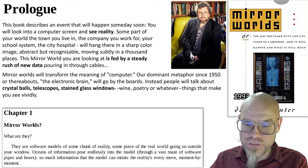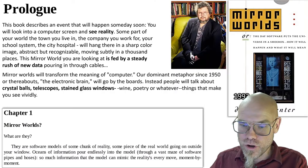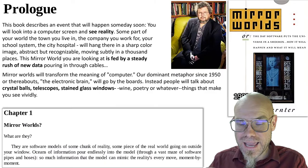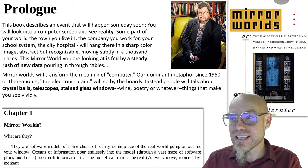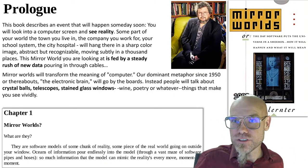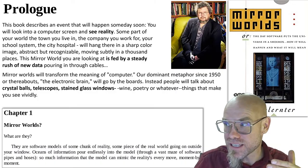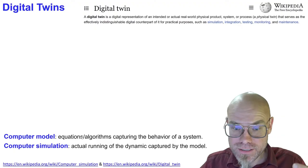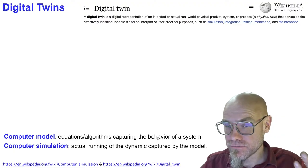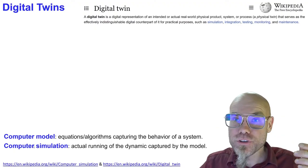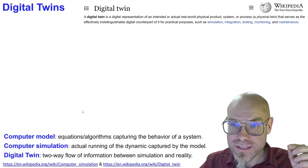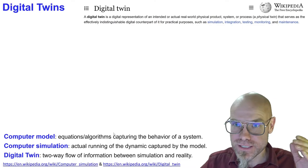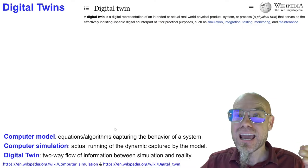So what are the mirror worlds? They are software models of some chunk of reality, some piece of real world going on outside your window. Oceans of information pour endlessly into the model. And that's the idea now we go then towards the digital twin. So we mirror something of reality.